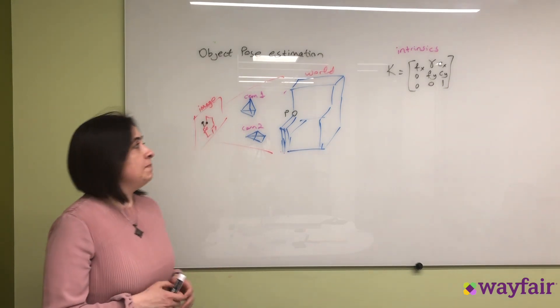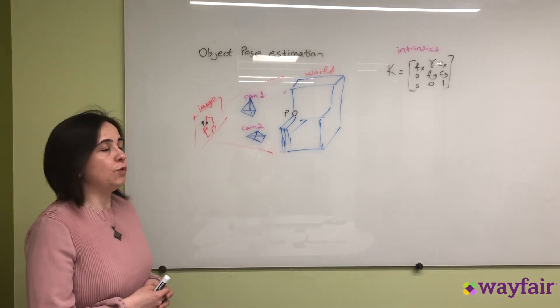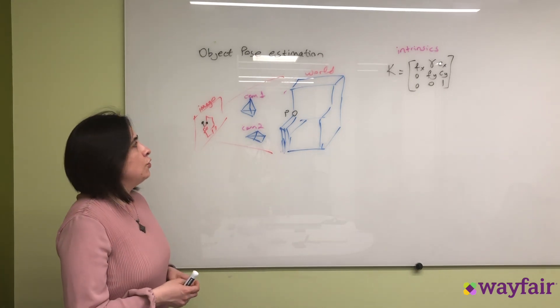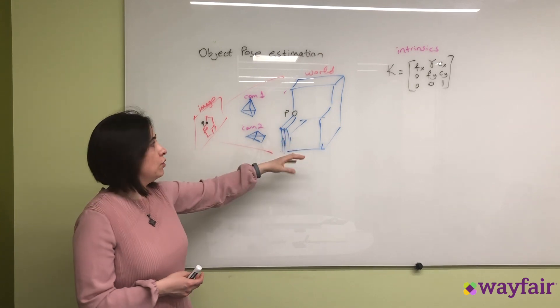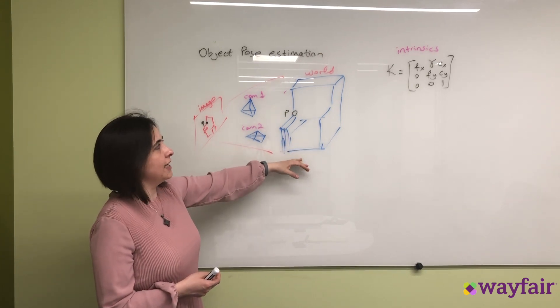So how do we solve this problem? First of all, we need to understand the imaging. Usually the objects appear in the 3D world and in a 3D coordinate system.